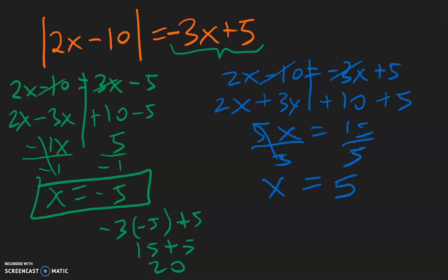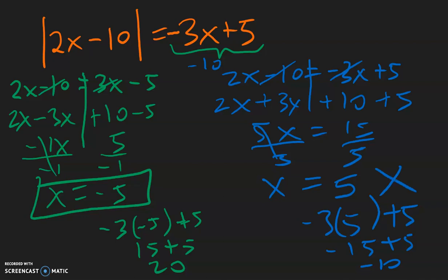Now let's do the same with the blue answer, positive 5. So we put negative 3 times positive 5 plus 5 — negative 3 times 5 is negative 15, plus 5 is negative 10. This is basically saying that on this side of the equation you have a negative 10. We know that absolute value cannot equal a negative. So that means x equals 5 is a fake solution — that's the extraneous. So the only real answer is x equal to negative 5.